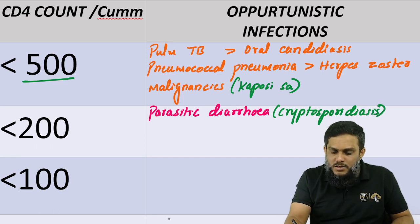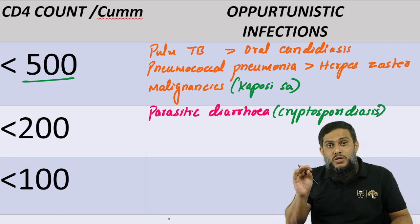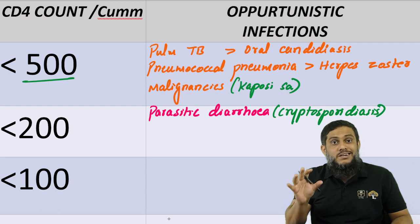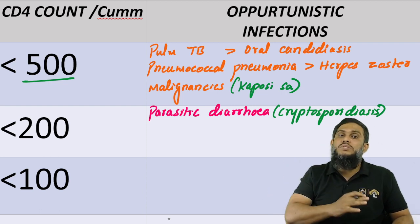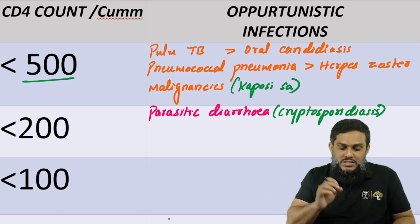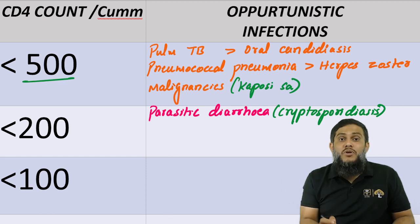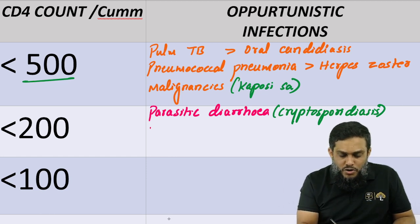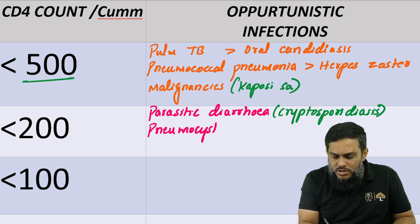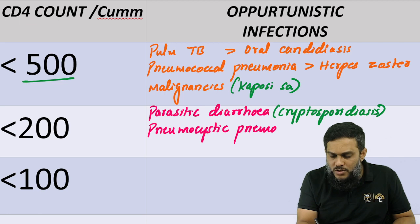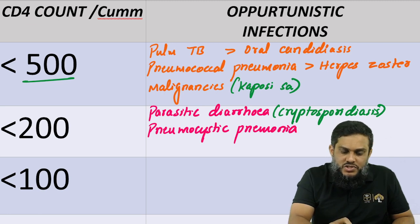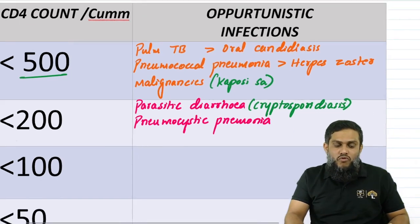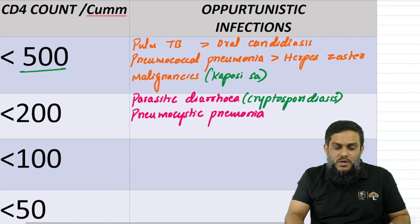Cryptosporidiosis is the most important, though cyclosporiasis and cystoisosporiasis are also seen. Apart from parasitic diarrhea, we also see pneumocystis pneumonia — PCP — which is a very important infection seen when CD4 count falls below 200.